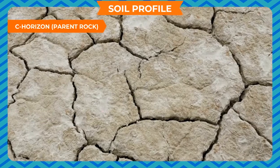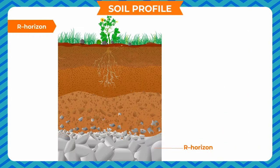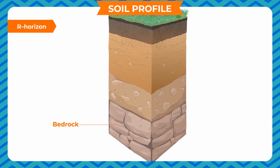This layer of the soil is infertile. R-horizon: Below the C-horizon is a layer of hard rock called bedrock or R-horizon. Water cannot penetrate through the bedrock.